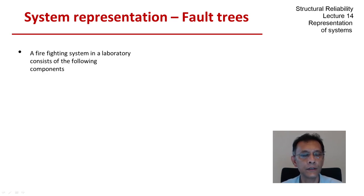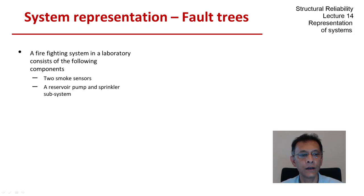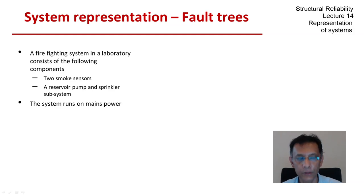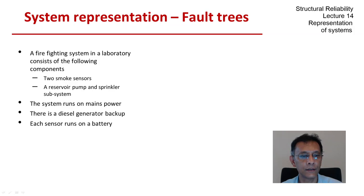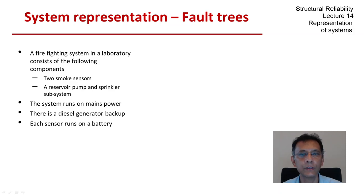The system consists of two smoke sensors, a pump and sprinkler subsystem, a power supply system that involves mains and a backup, and the sensors themselves need batteries. The sensor system does not depend on the mains or the backup power.